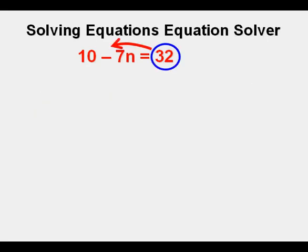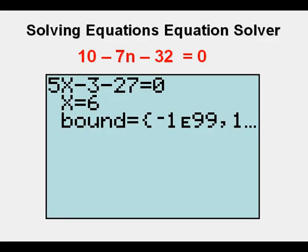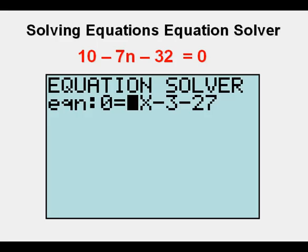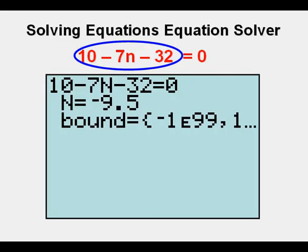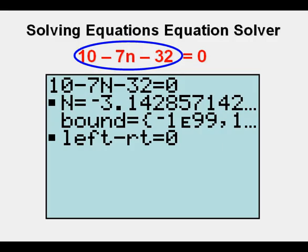First, make the equation calculator ready by getting zero on one side. The easiest thing to move is the 32 to the left of the equal sign — positive 32 becomes negative 32 on the left side, and zero remains on the right. We get to equation solver by pressing math, then the zero key. To clear out the prior equation, press the up key, then the clear key. Now we enter the left side of the equation. We can make the variable n by pressing alpha, then the log key on the left that has n above it. Now we use the solver by pressing alpha, then the enter key with the green solve above it. We press alpha then enter again to make sure the answer is not left over from another problem.